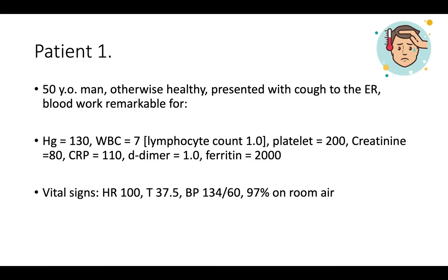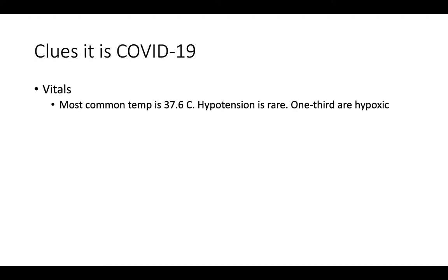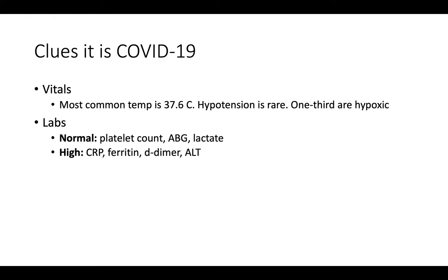Vital signs: heart rate of 100, temperature of 37.5 (about 99.7°F), normotensive, and saturating okay on room air. He was discharged home from the emergency department — this is no fault of the emergency physician; I probably would have done the same. What were some clues this might have been COVID? The most common temperature is 37.6, hypotension is rare, and one-third are hypoxic. In terms of labs, the platelet count is most often normal, ABG relatively normal, lactate normal, inflammatory markers often elevated, and an elevated ALT if you order it.